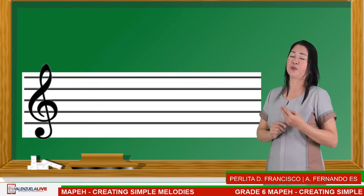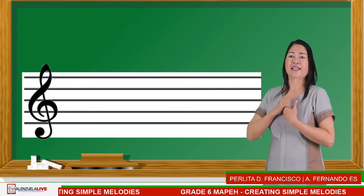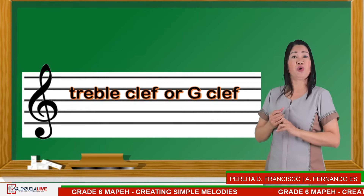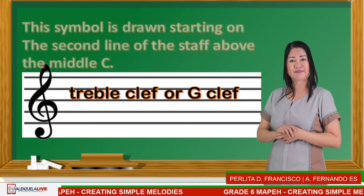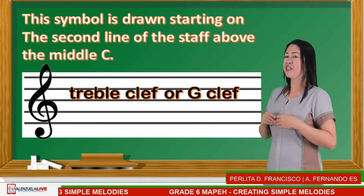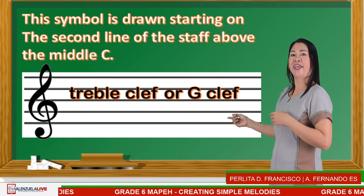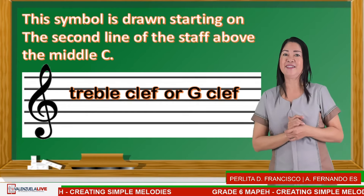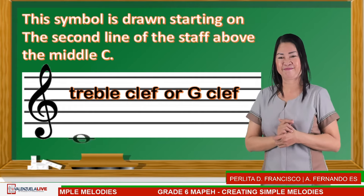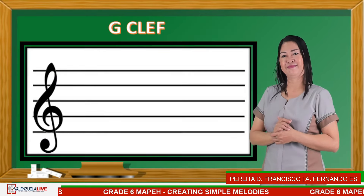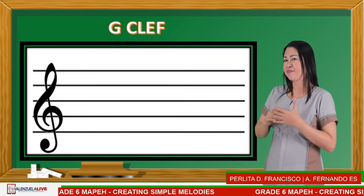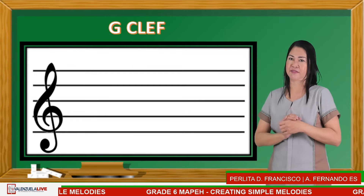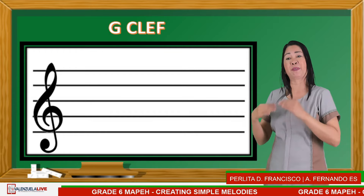The first one is the treble clef, also known as the G-clef. This symbol is drawn starting on the second line of the staff, above the middle C. In the G-clef, every line has letter names or pitch names. Starting from the bottom to the top: first line — E, second line — G, third line — B, fourth line — D, and fifth line — F.